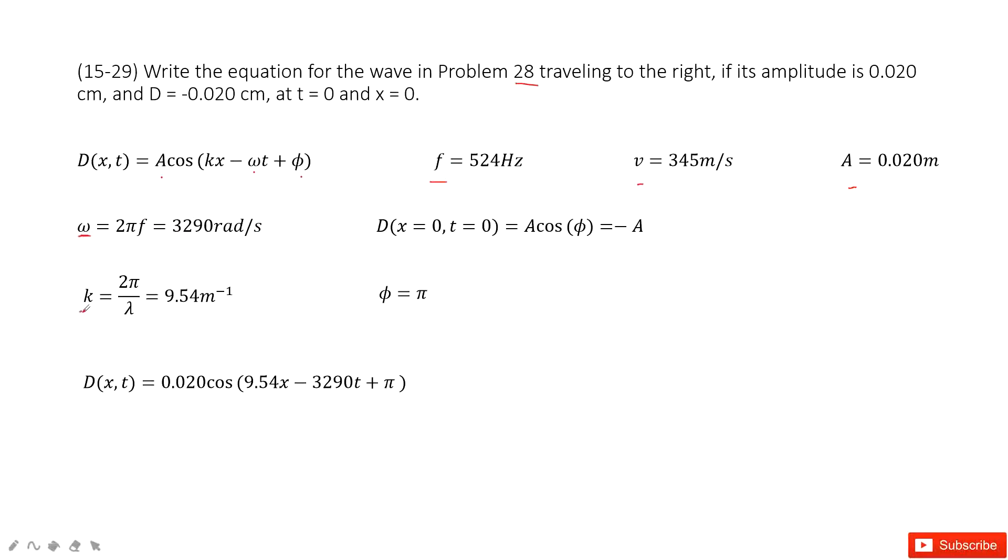The next one, k, wave number is 2 pi over lambda. And this one is also very easy. We can get it there. Now the only question is how to find the phi phase shift.